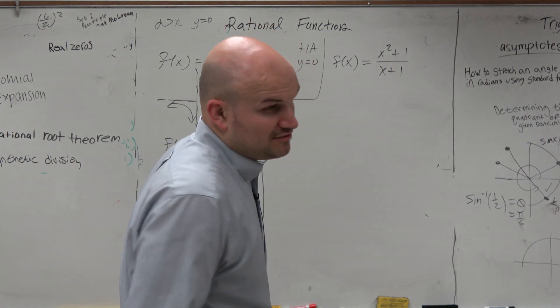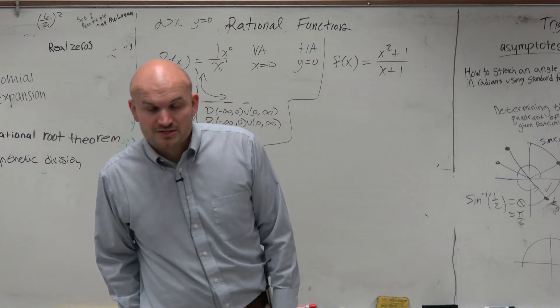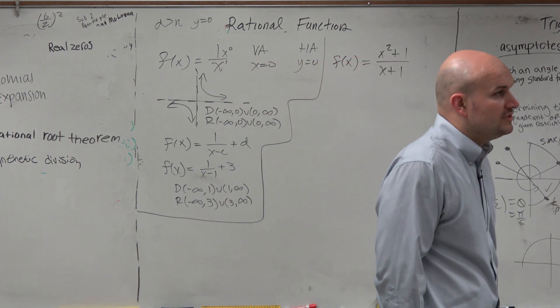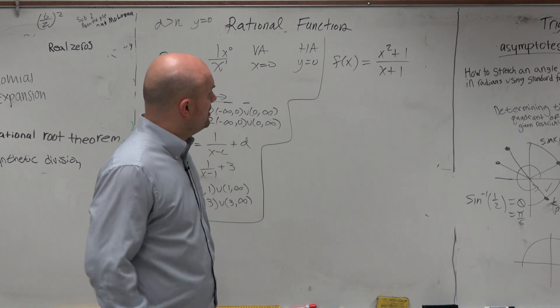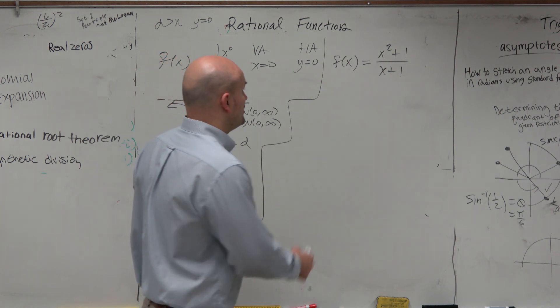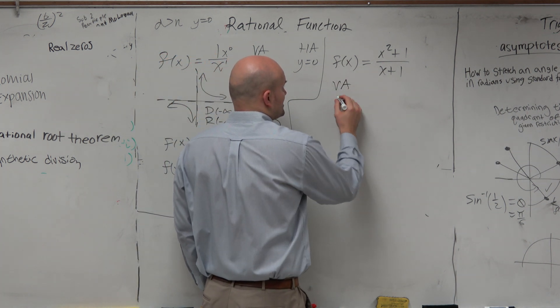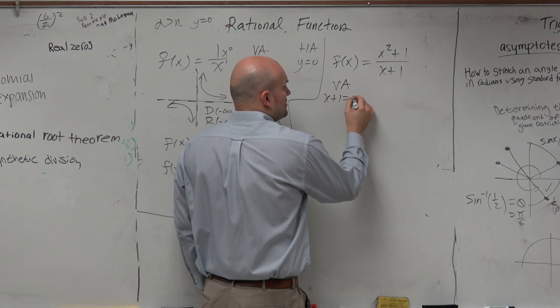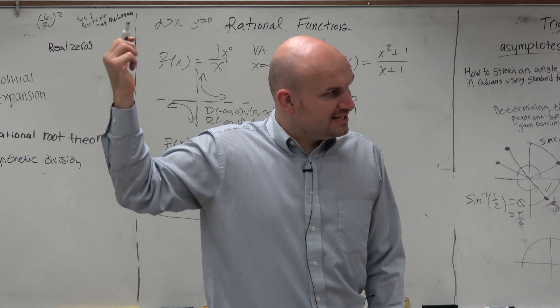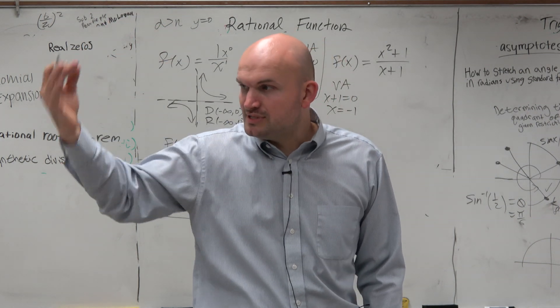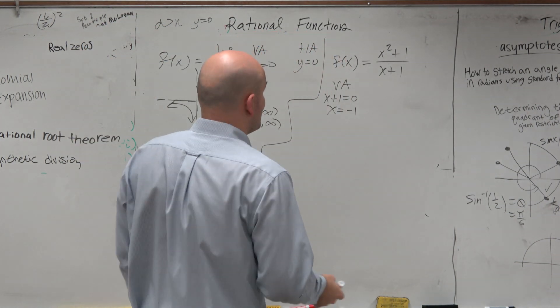So here's another rational function. Now, what if I asked you on this rational function to identify the asymptotes? And we'll talk about x and y-intercepts at the end. But let's go and take a look at this. Well, vertical asymptote is when the denominator equals 0. Right? Same process as we did in chapter 1. Set the denominator equal to 0 and solve.